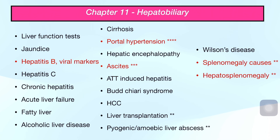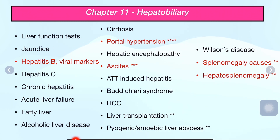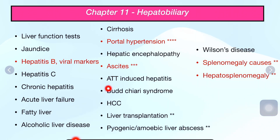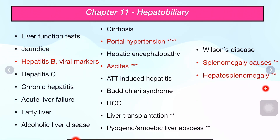Let us get on with the video. For hepatobiliary, Liver Function Test is important — just like in the first video you studied Kidney Function Test, Liver Function Test, and Thyroid Function Test. You should know important values, asked in the form of flash cuts. Topics include: Liver Function Test, jaundice, Hepatitis B viral markers, Hepatitis C, chronic hepatitis, acute liver failure, fatty liver, alcoholic liver disease, cirrhosis, portal hypertension, hepatic encephalopathy, ascites, ATT-induced hepatitis, Budd-Chiari syndrome, hepatocellular carcinoma, liver transplantation, pyogenic and amoebic liver abscess, Wilson's disease, splenomegaly causes.